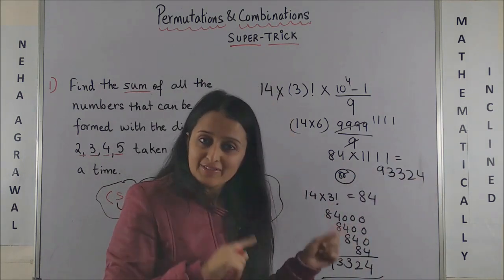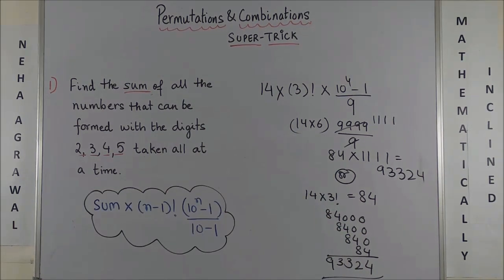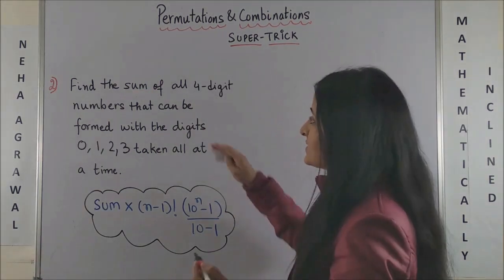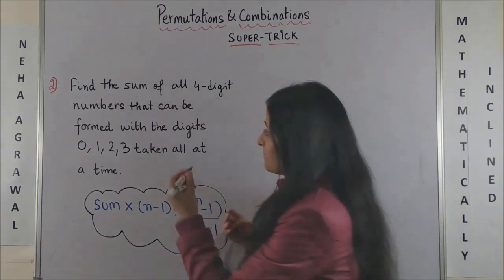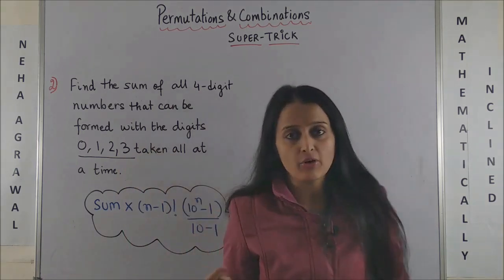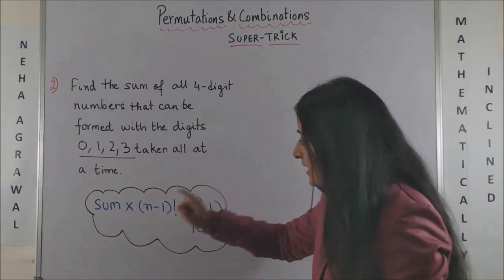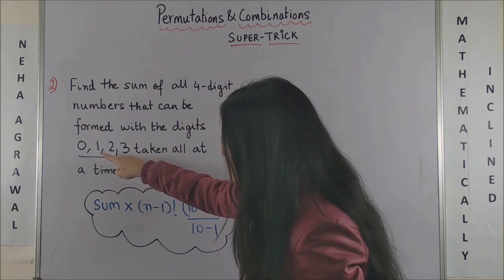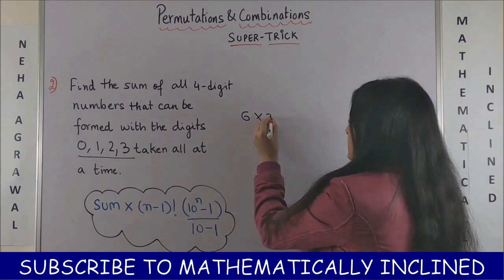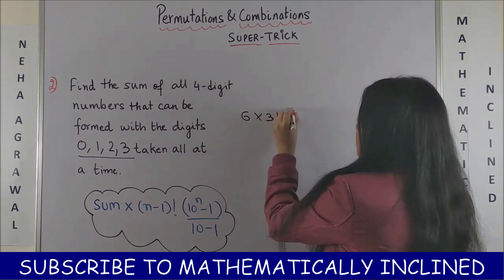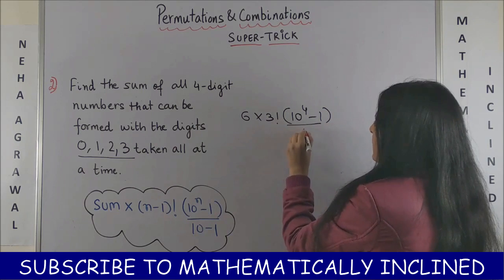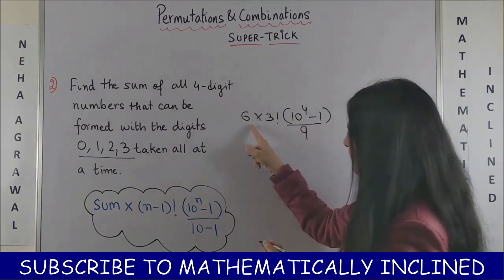Look at the second question. Again, the same: find the sum of all four-digit numbers that can be formed making use of these digits 0, 1, 2, 3 taken all at a time. So once again, applying the same formula, summing this up gives you 6, into again 4 minus 1 is 3 factorial, and into 10 raised to power 4 minus 1 upon 10 minus 1.